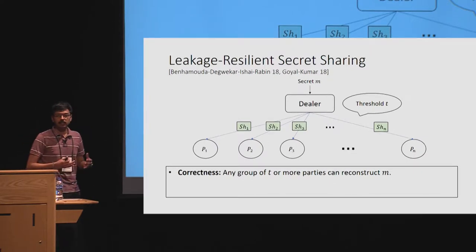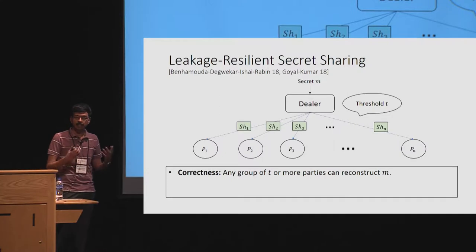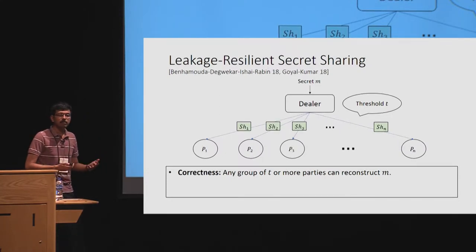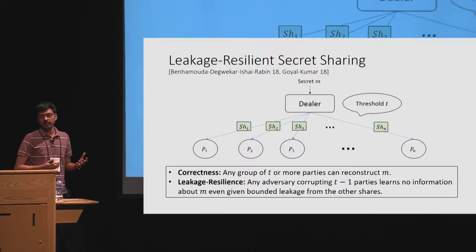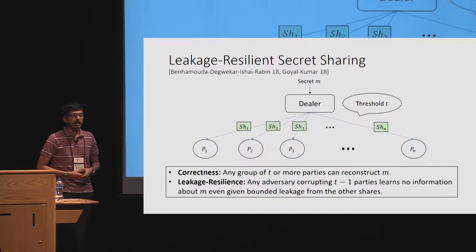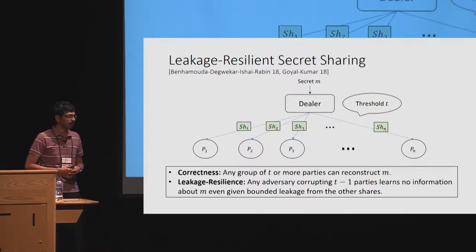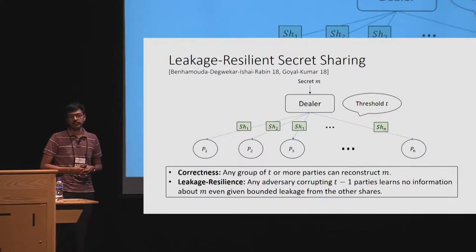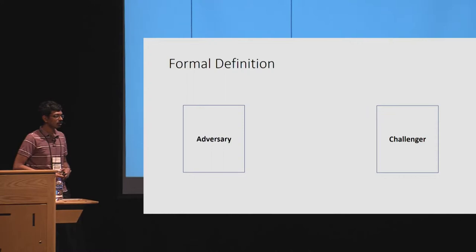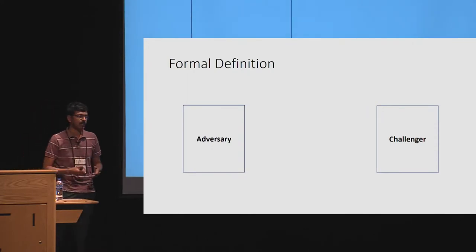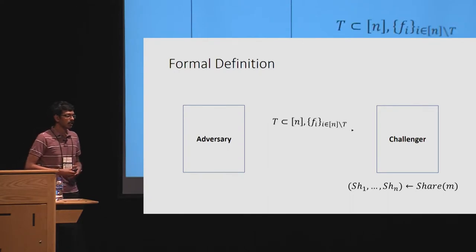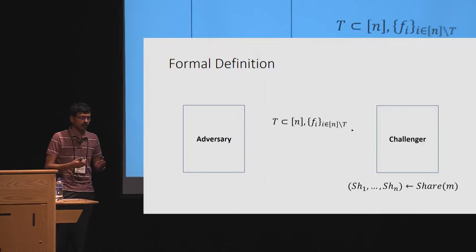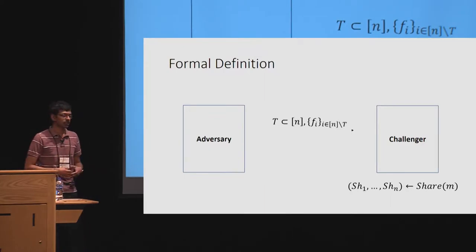Leakage-resilient secret sharing is just like any other threshold secret sharing satisfying the correctness property. In addition, the privacy property is strengthened to leakage resilience, which states that any adversary corrupting at most t minus 1 parties learns no information about the secret message, even when given some bounded leakage from the other shares.